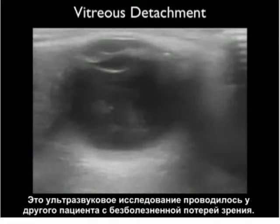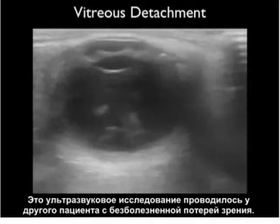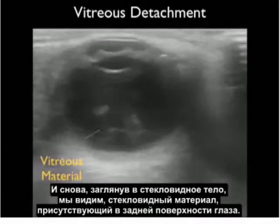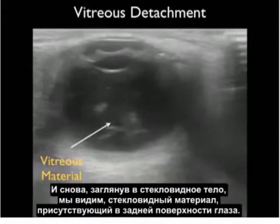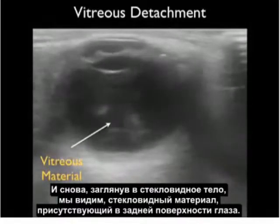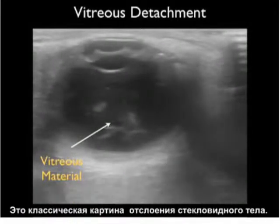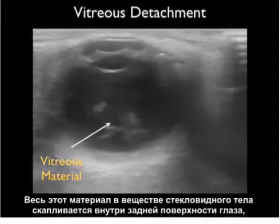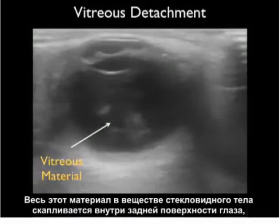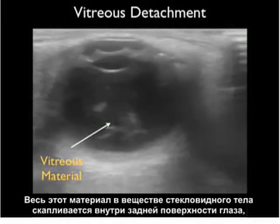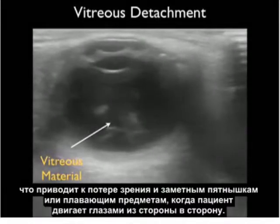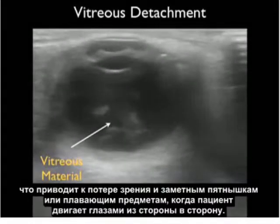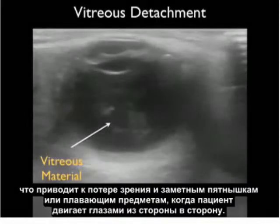This ultrasound was taken from another patient with painless loss of vision. Looking into the vitreous body, we see vitreous material present within the posterior aspect of the eye — the classic appearance of vitreous detachment. All that vitreous material has accumulated in the posterior aspect of the eye, leading to vision loss and prominent speckles or floaters as the patient looked from side to side.